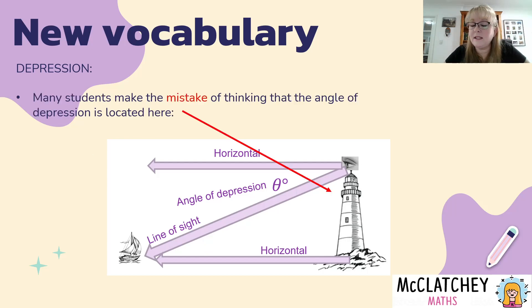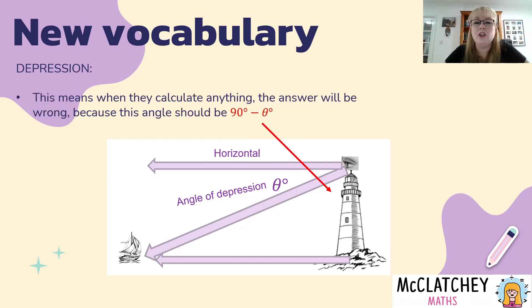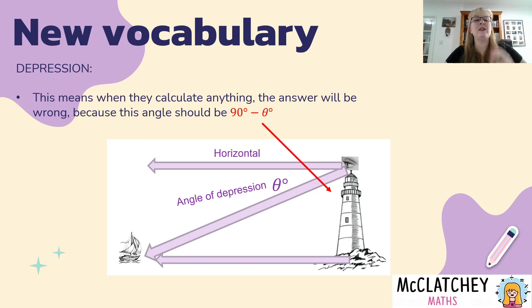That's important to remember when setting up your triangle to solve a problem. If you remember that they form one big rectangle made up of two parallel lines, you can find angles inside triangles. Now, a common mistake is thinking the angle of depression is located between the line of sight and the vertical — but no, it's always from the horizontal. If you make that mistake you'll be out by 90 minus the actual angle of depression, so your answer will be very wrong. Always remember where that angle of depression is.